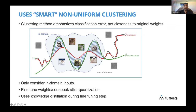Instead, what they're trying to do — shown by the green boundary — is only model the decision boundary within the in-domain region. They don't care what's happening outside. So they specifically look at the reconstruction error for in-domain inputs only. That's the essence of their idea. They also use fine-tuning of the weights and codebook after quantization, and knowledge distillation, which turns out to be pretty critical in the fine-tuning step.